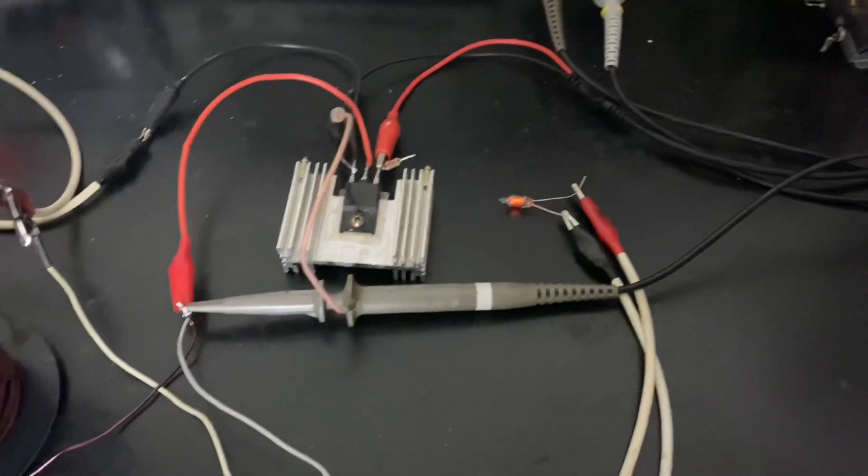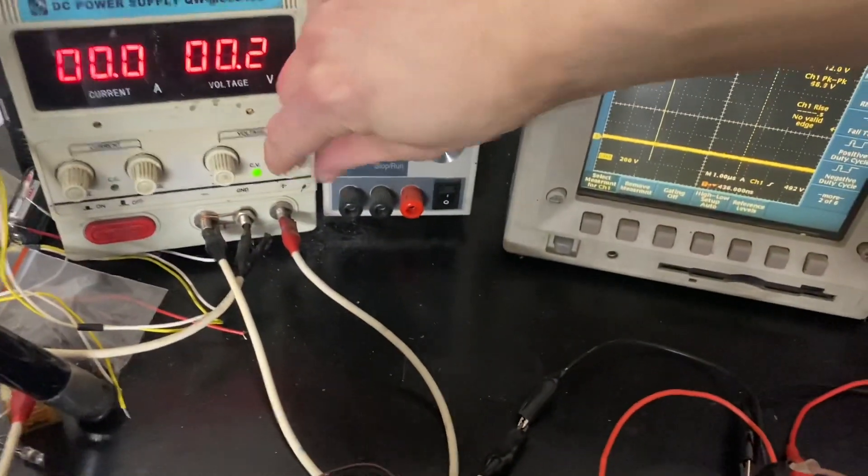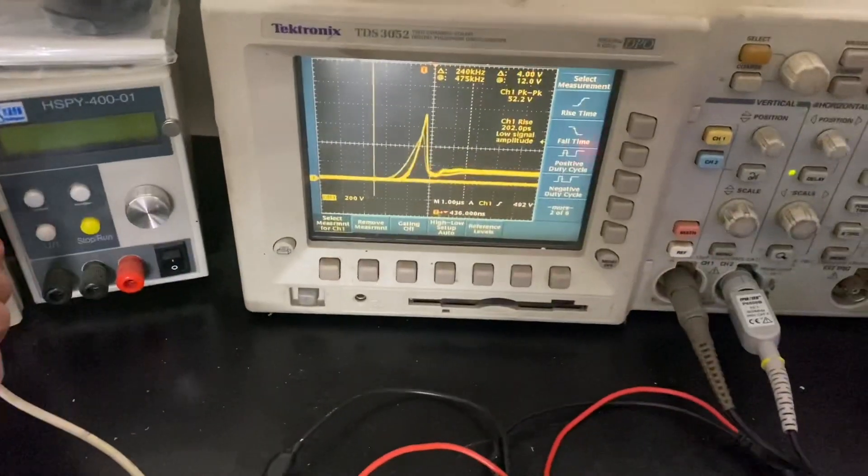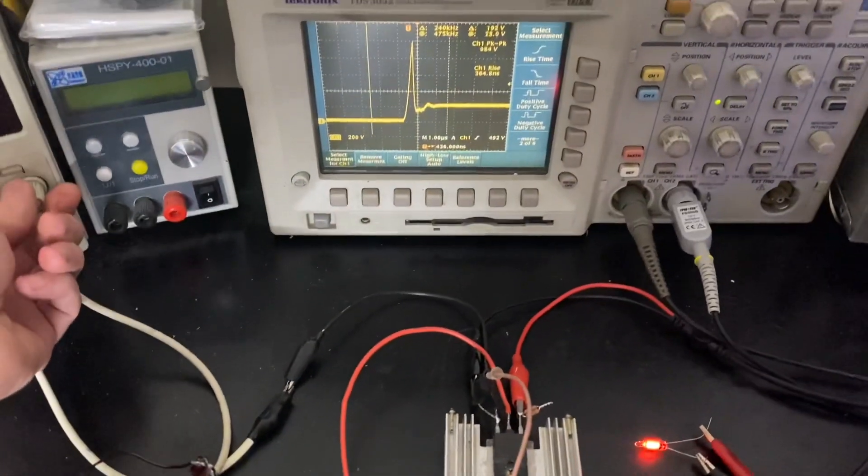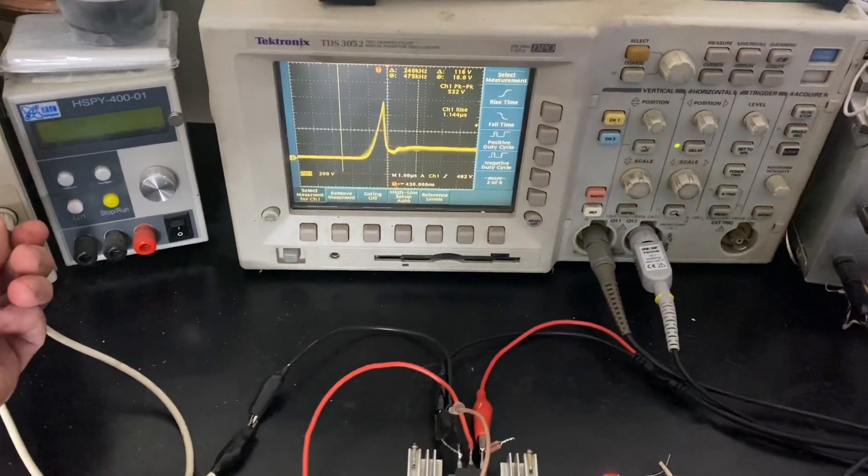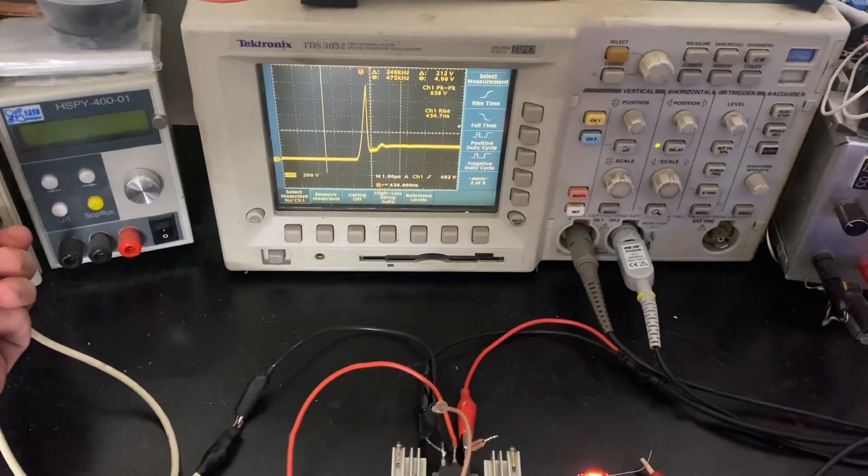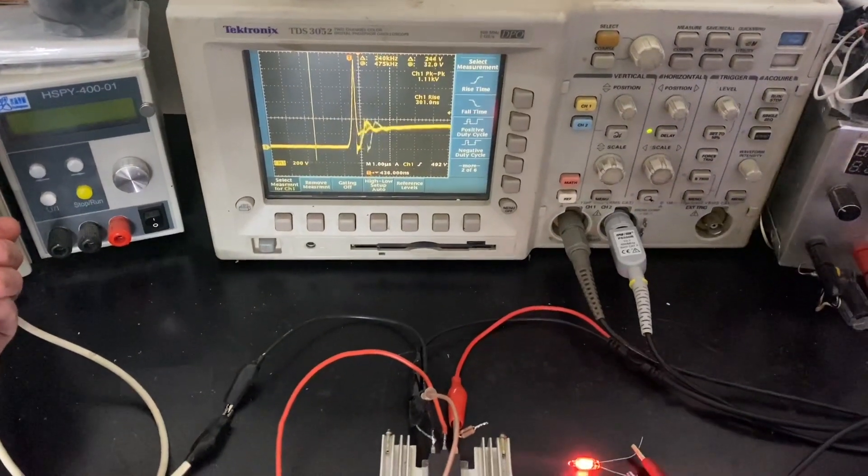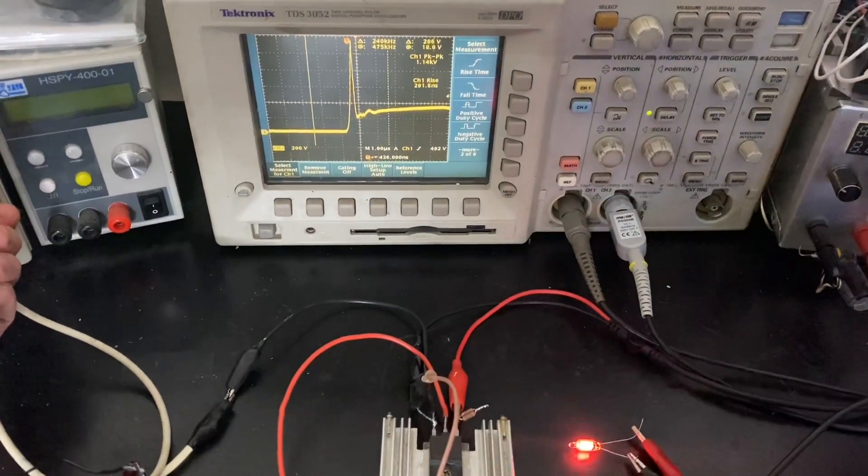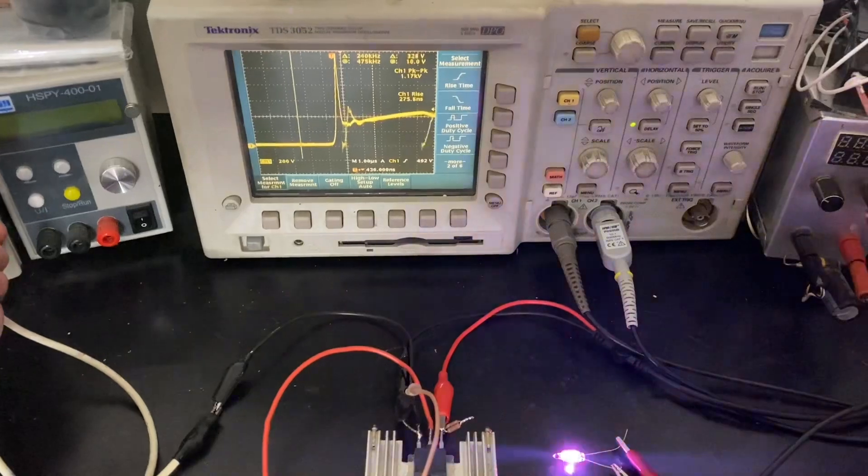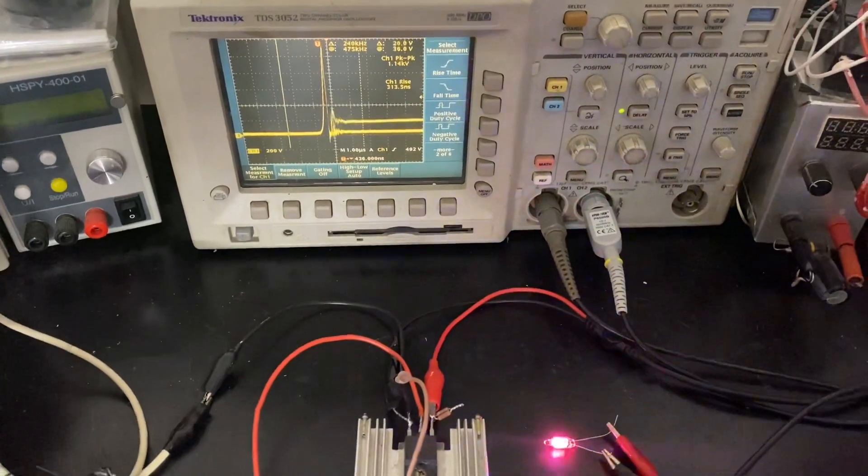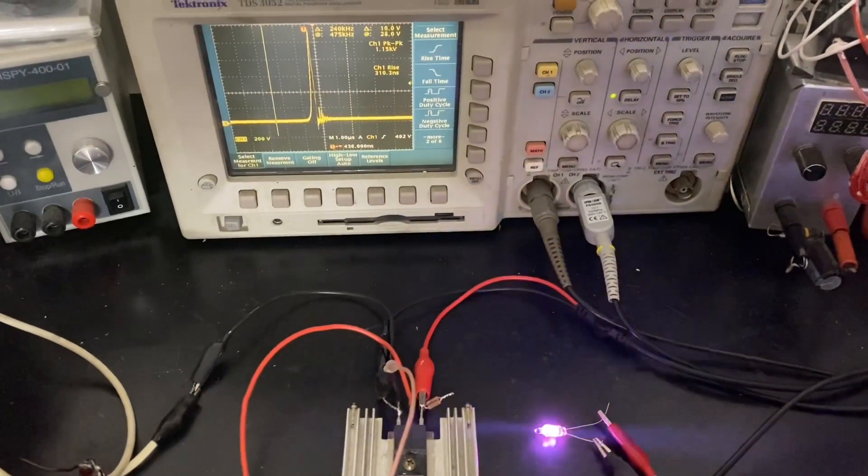So I've already got signal applied, and as I bring up the power, we're actually going to see on the scope here, we start out with a kind of slower rise. As it comes up in speed we get that sharper rise, we can begin to see some purple inside the bulb there. We can see we're already pushing 1.2 kV, and there we go.